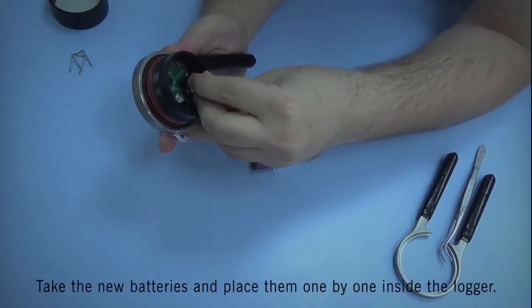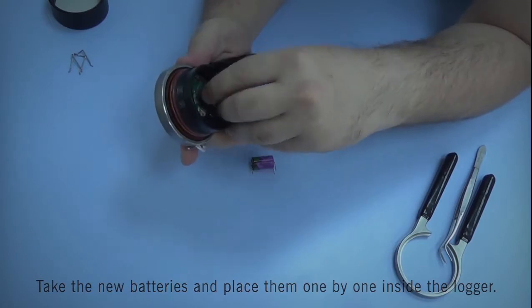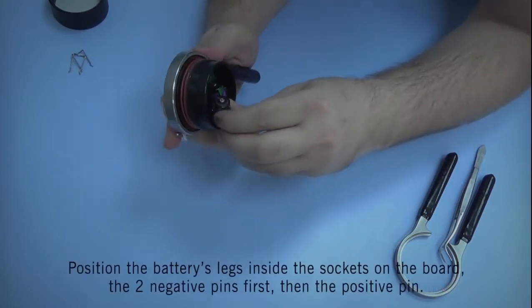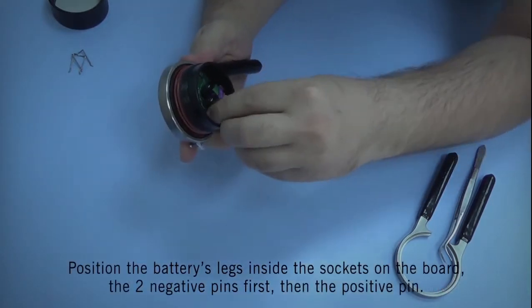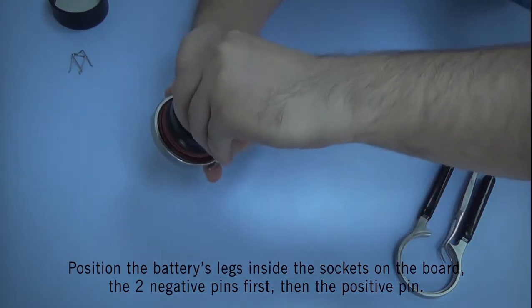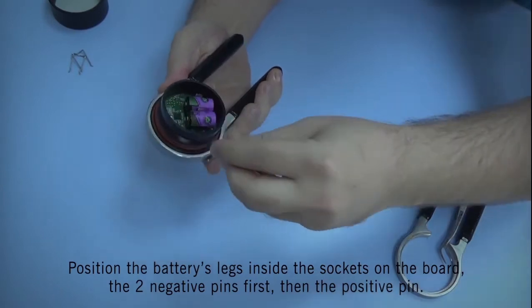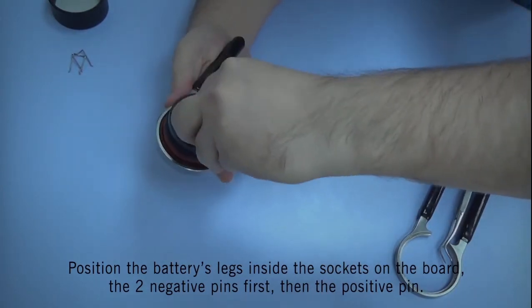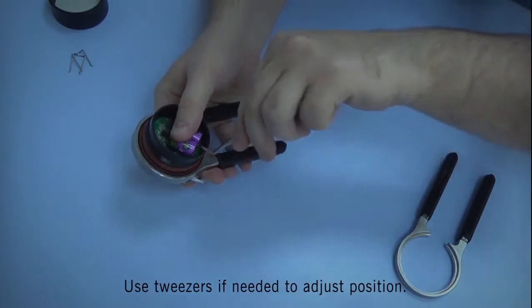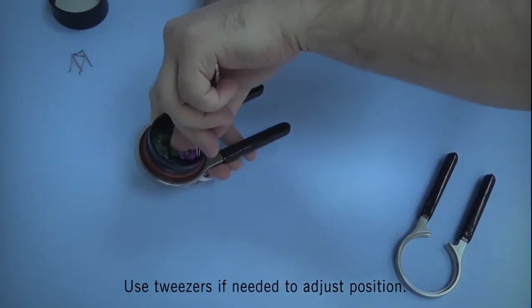You may now place the new batteries inside the logger. It is easier to align the two negative pins first and then the positive pin. If needed, you may use the tweezers to set the battery in place.